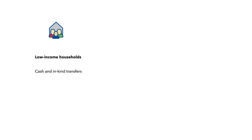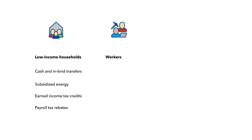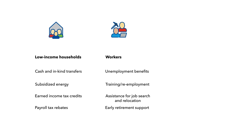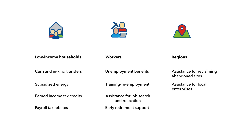Assistance measures for vulnerable groups might include for low income households cash and in-kind transfers like food stamps, discounted prices for energy, earned income tax credits and payroll tax rebates. Measures for displaced workers could include extended unemployment benefits, training and re-employment services, financial assistance for job search and relocation and early retirement support. Regional assistance might include support for reclaiming abandoned mining and drilling sites, assistance for local enterprises and temporary budget support for local governments.